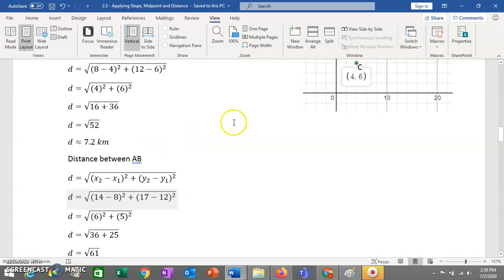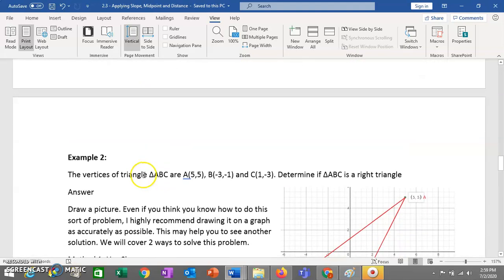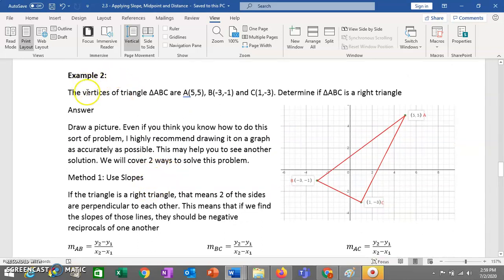Okay. So that's the first question. Second question is a bit more tricky. You have the vertices of some triangle, A, B, C. So the points are going to be A, B, and C. You have A at (5, 5), B at (-3, -1), C at (1, -3).